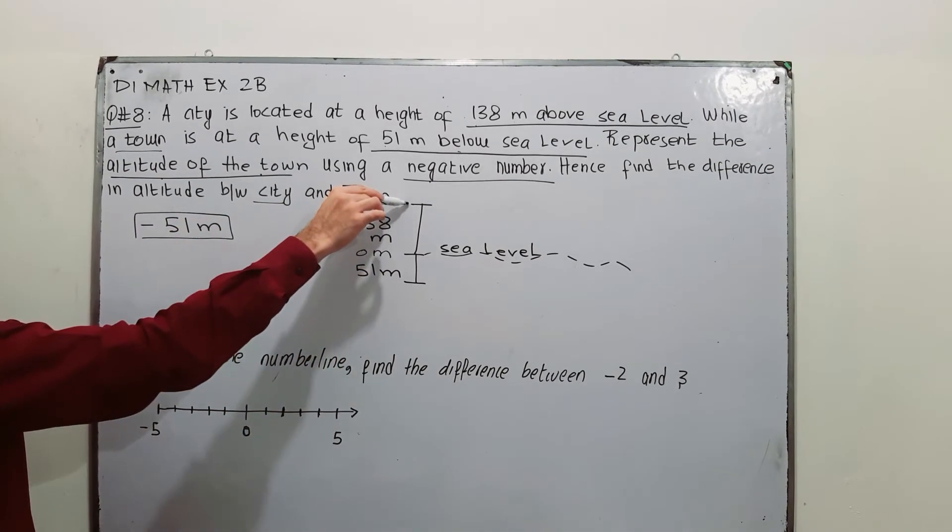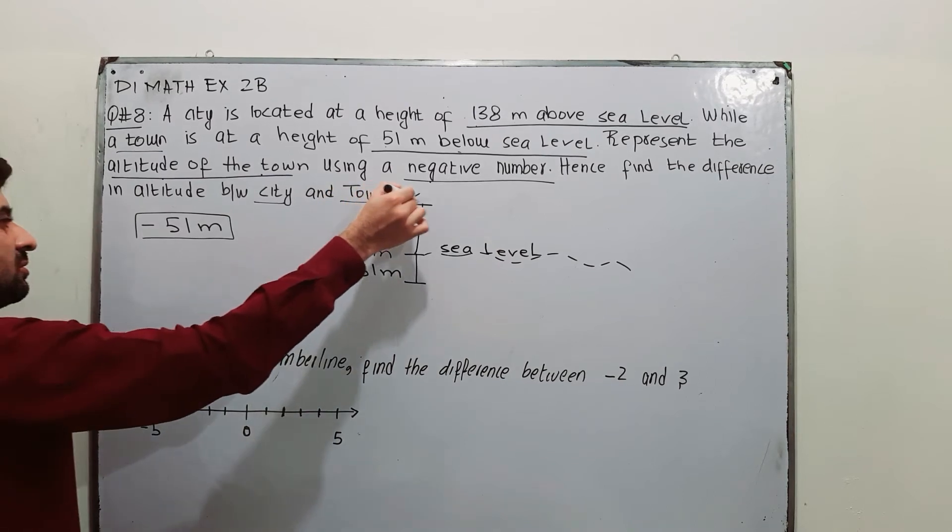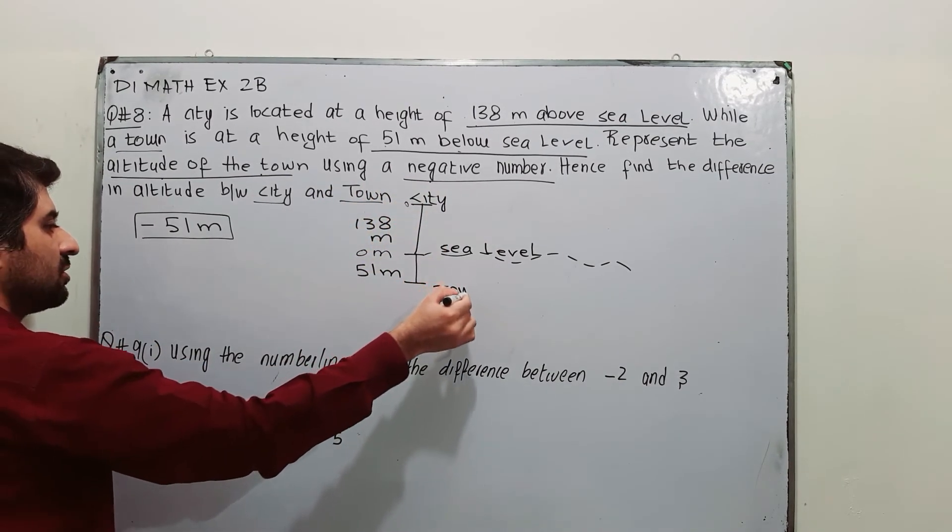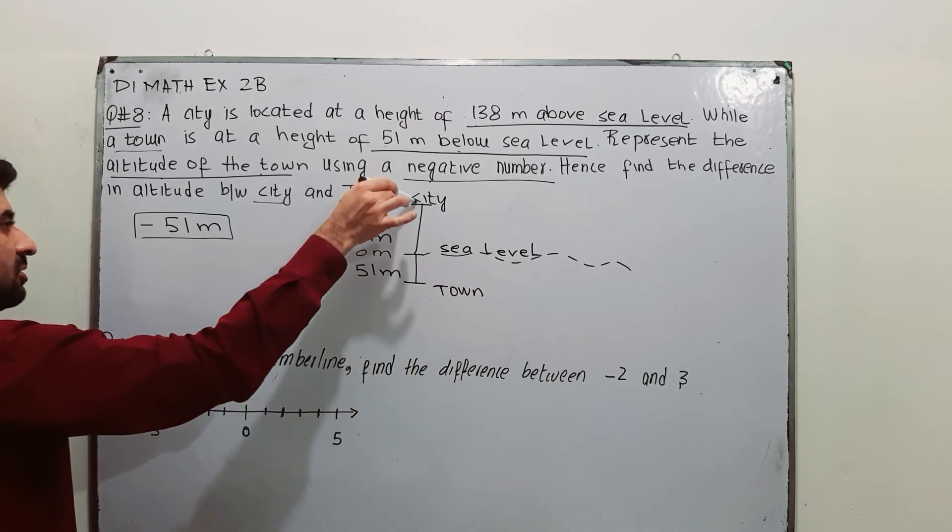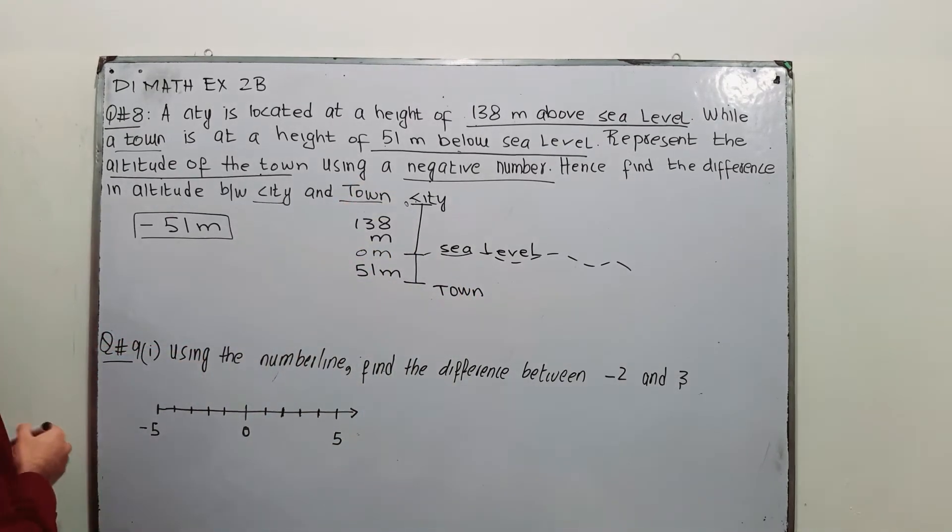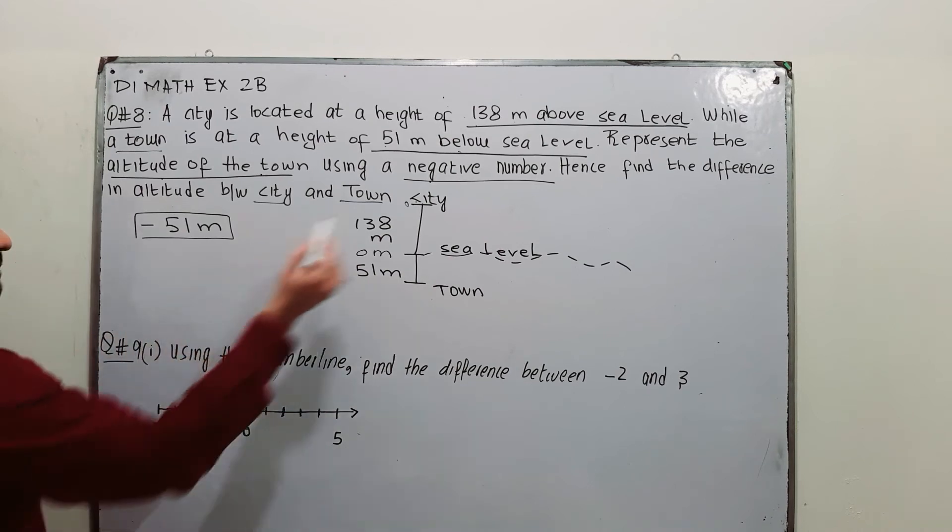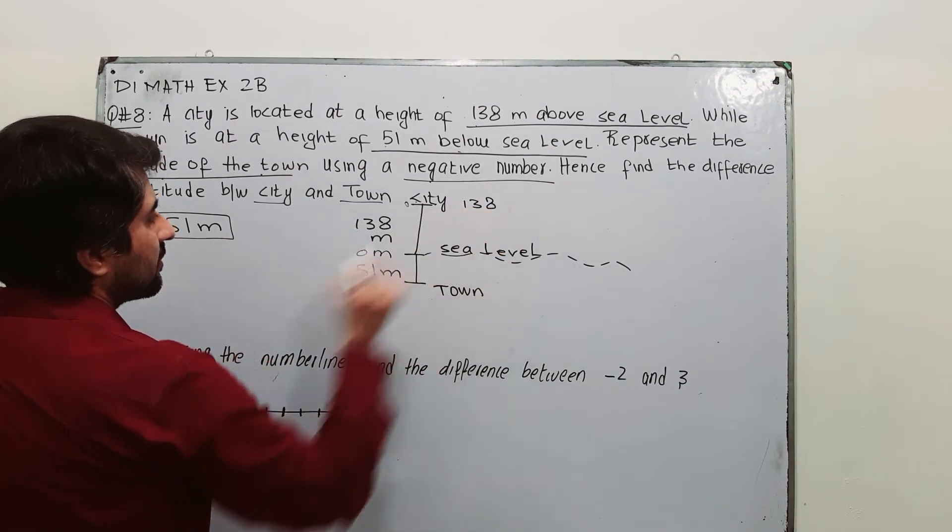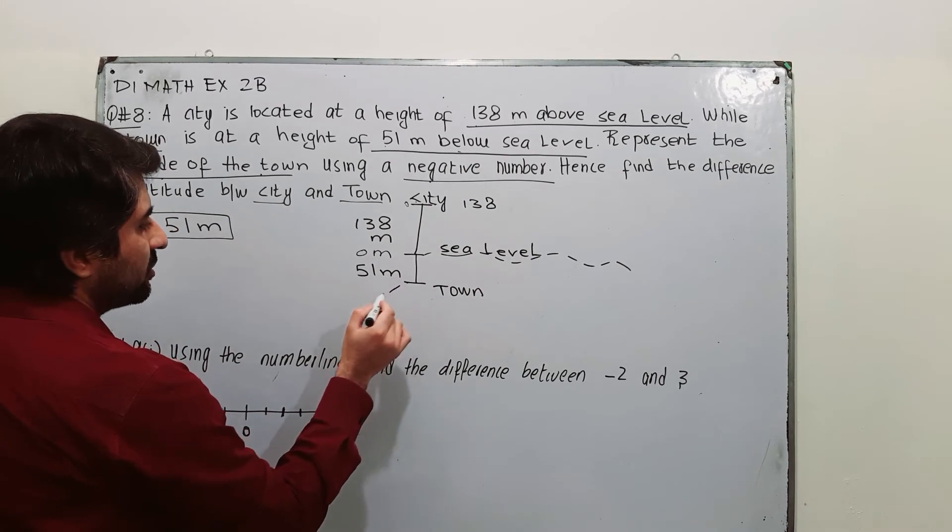Now what is the difference between the altitude of city and town? That is quite clear. At this point the altitude is 138, at this point the altitude is 51.